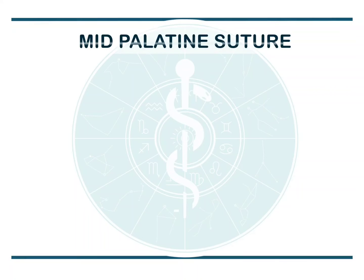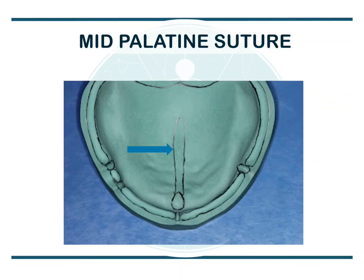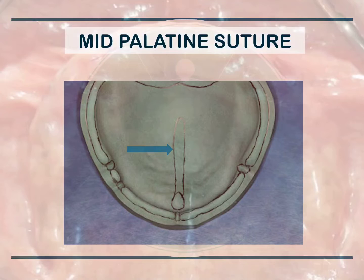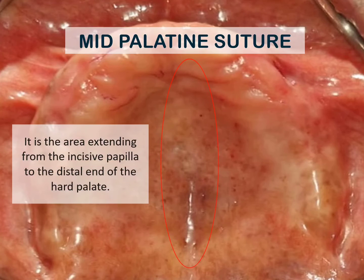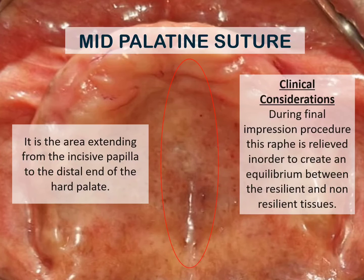Next we will be talking about the mid-palatine suture. It is the area that extends from the incisive papilla to the distal end of the hard palate. During the final impression procedure, the raphae is relieved in order to create an equilibrium between the resilient and non-resilient tissues.